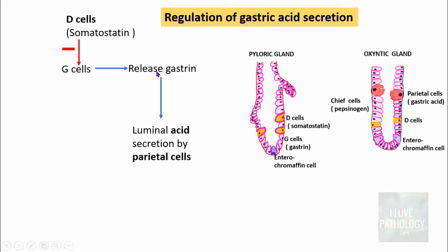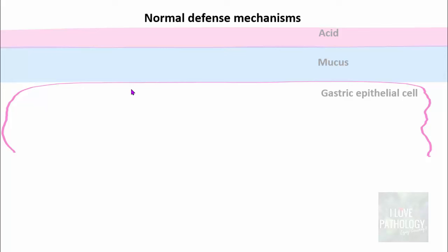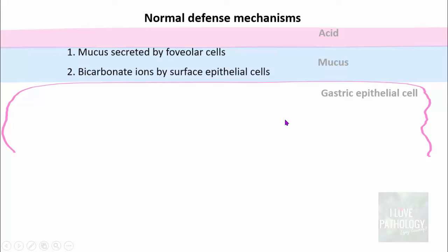Somatostatin inhibits G cells to reduce gastrin secretion, thereby preventing acid secretion by parietal cells. Now let's look into the normal defense mechanisms. We know the gastric mucosa contains acid with a pH close to 1, which has the potential to damage epithelial cells. But normal gastric mucosa has protective factors. The first is mucus secreted by the foveolar cells, which forms a layer above the gastric epithelial cell preventing acid diffusion. The second is bicarbonate ions secreted by surface epithelial cells, which neutralize the acid.